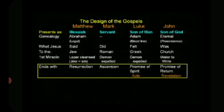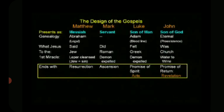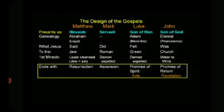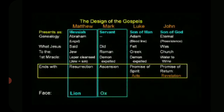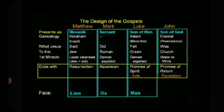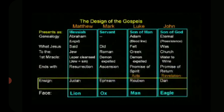Each Gospel ends distinctively: Matthew with the resurrection, Mark with the ascension, Luke sets up his sequel — the book of Acts — with the promise of the Spirit, and John sets up his sequel in the book of Revelation. I believe John's Gospel was written after the Patmos experience. Each one of these was recognized by the early church as being represented by the four faces of the cherubim — the lion, the ox, the man, and the eagle — the same signatures that surround the camp when Israel was encamped.